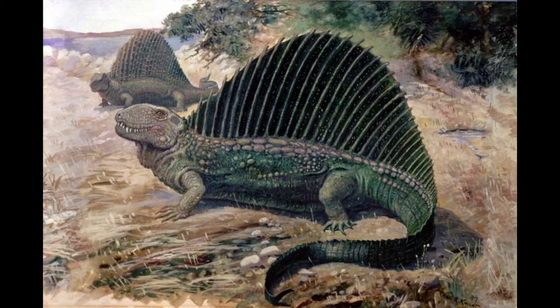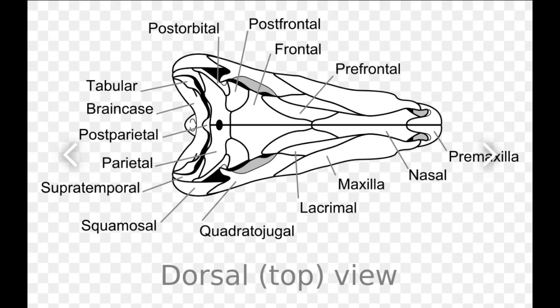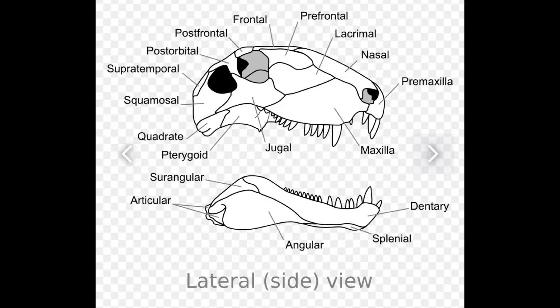Pelicosaurs exhibited several primitive characteristics but also laid the groundwork for future synapsid evolution. Their jaws and teeth began to show differentiation, a feature that would become more pronounced in later synapsids, helping them fill various ecological niches as both predators and herbivores.